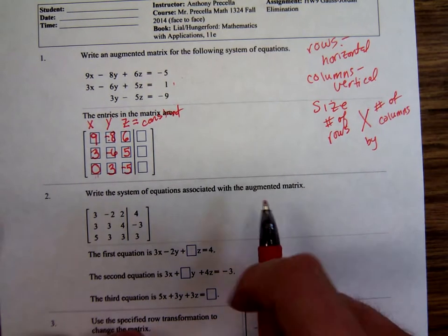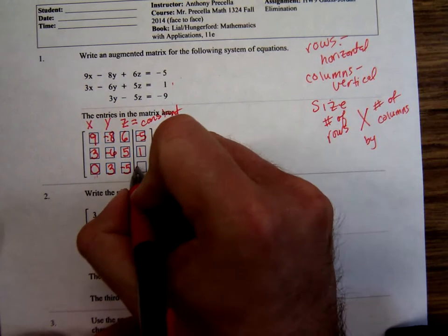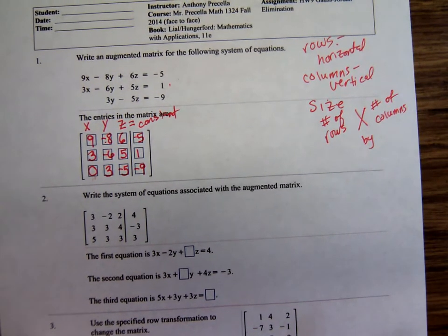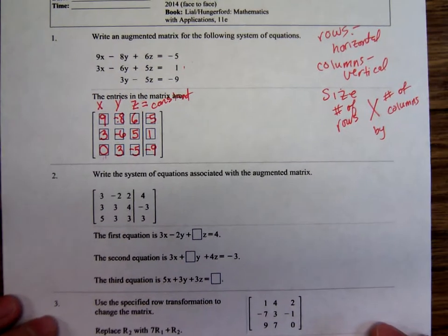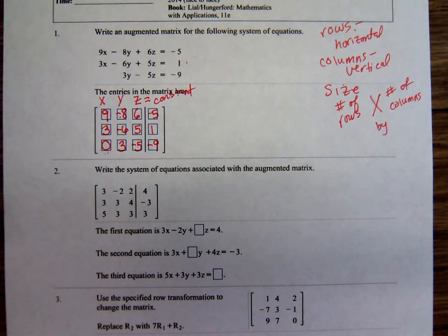Let's see. Negative 5, 1, negative 9. So, let's go to augmented matrix. Probably insulting your intelligence. Well, maybe the terminology's new to you.